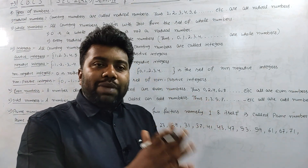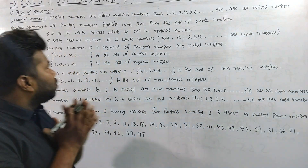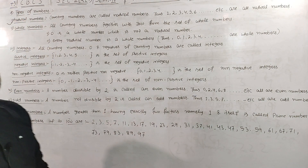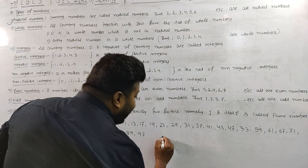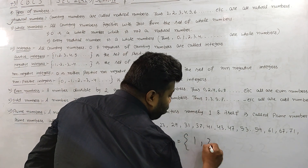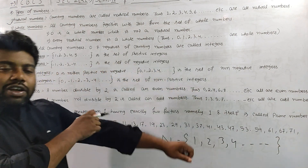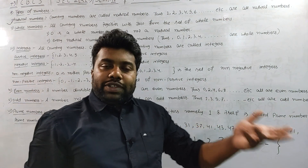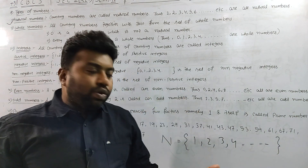So if you want to skip the video and check the number system: the first type is called a natural number. The natural number is denoted by N. The numbers are called 1, 2, 3, 4, and all of these numbers. So the natural number is 1, 2, 3, 4, 5, 6, 7, 10, or 50,000. Those are called natural numbers — 1, 2, 3 — all counting numbers that we use in daily life.